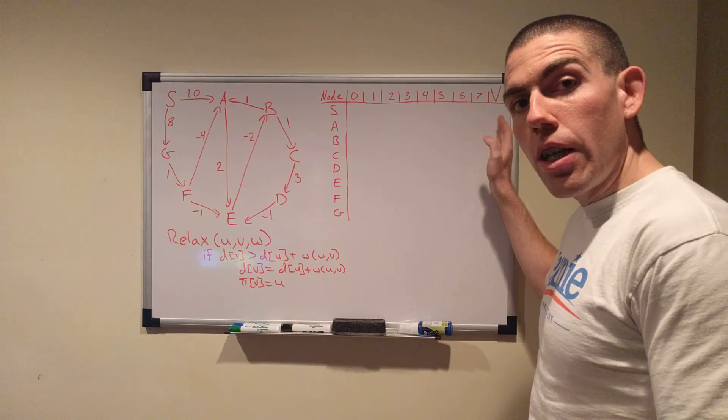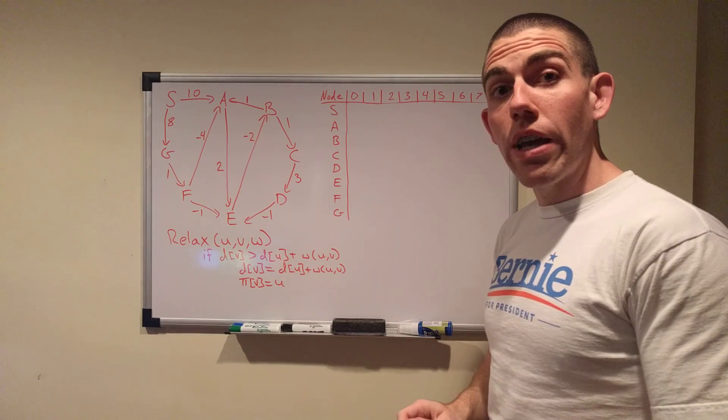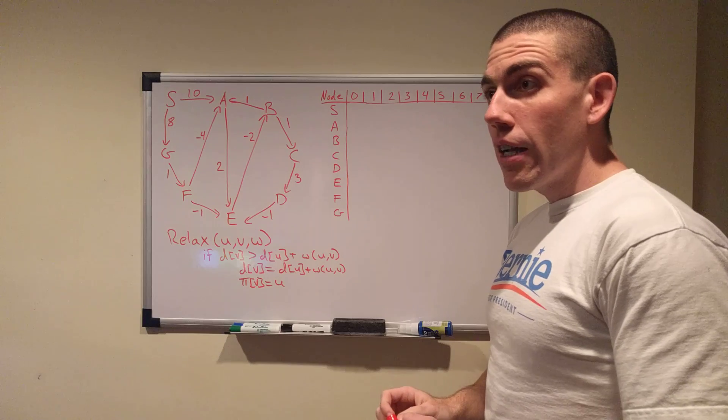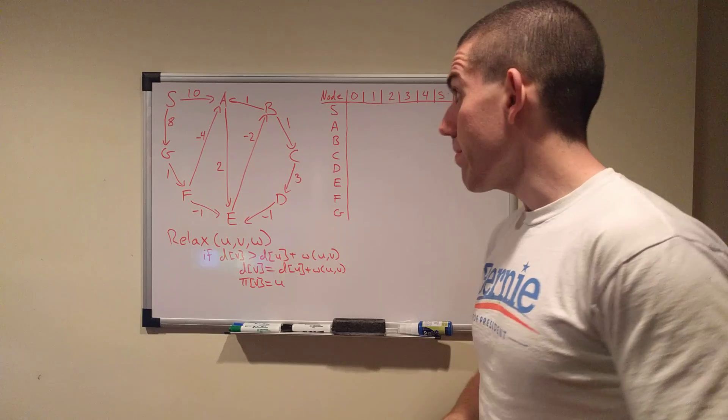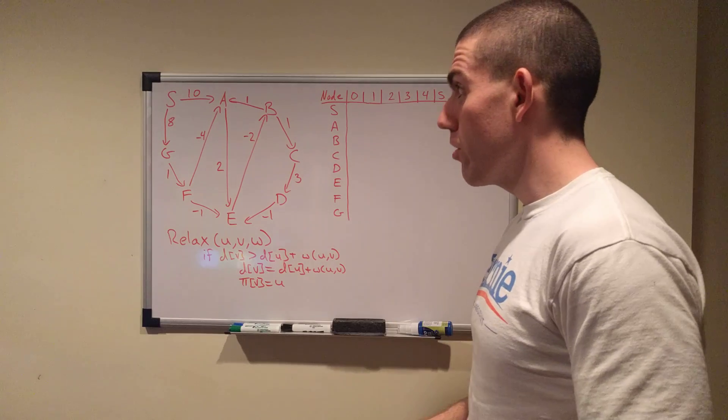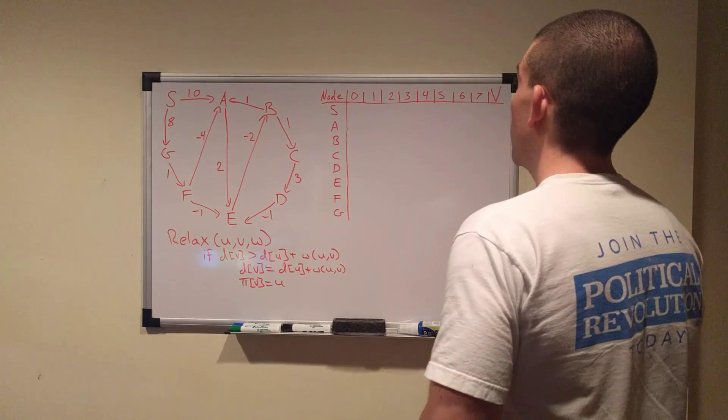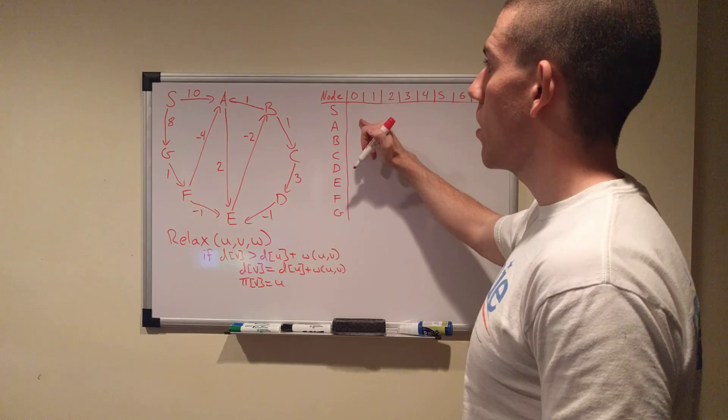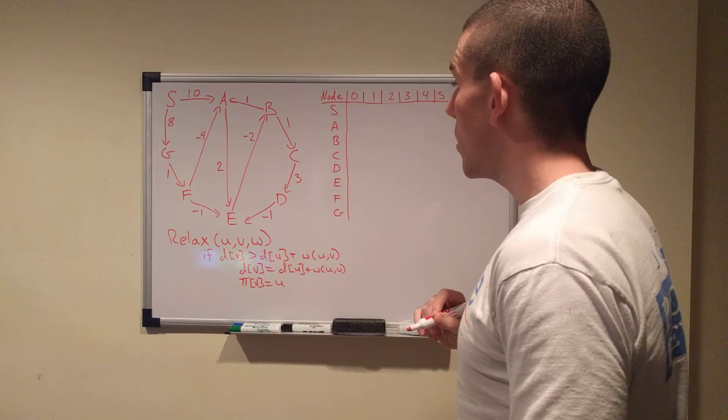This V-th column here corresponds to lines five through eight of the pseudocode in the previous video. It's the iteration that will check for a negative weight cycle. And if I've done this right, we shouldn't find that we have a negative weight cycle. So yes, let's begin.